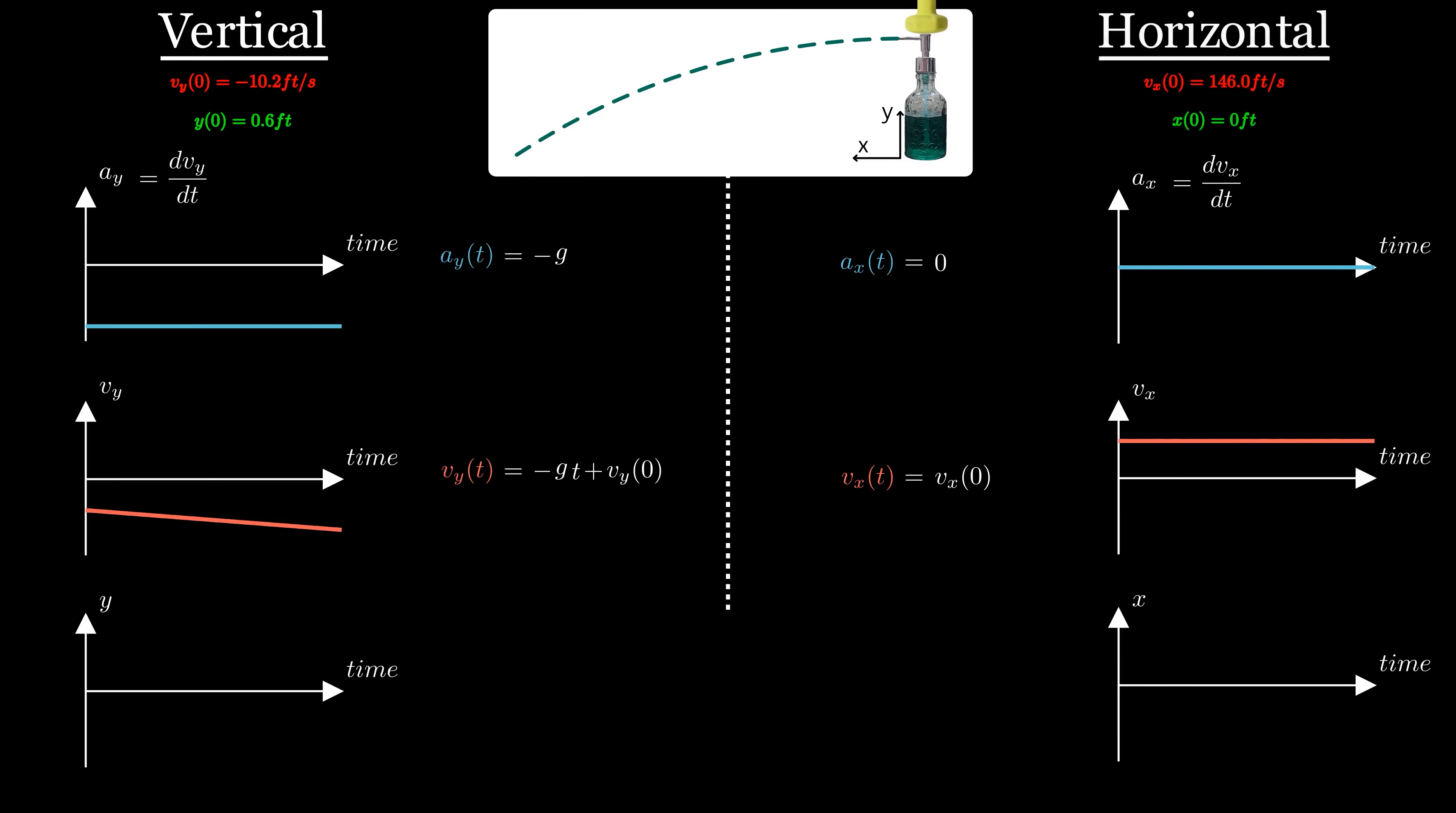This whole integration is a bit overkill for this type of simple example, but it's worth it in my opinion to get comfortable with it for the future. Anyway, since the velocity is just how the position changes with time, you can integrate again to get the shape of the position graph, and use the initial height to fully define the vertical position of the soap at all points in time. Lastly, of course, do the exact same, but now with the horizontal position.